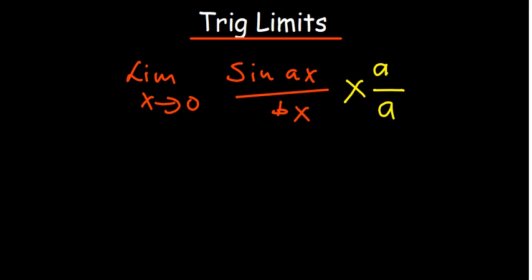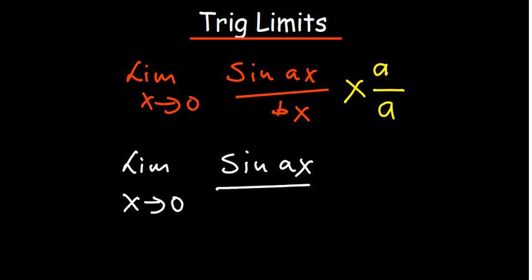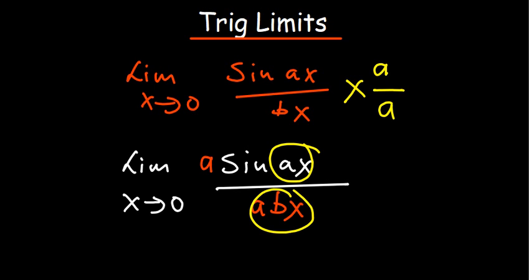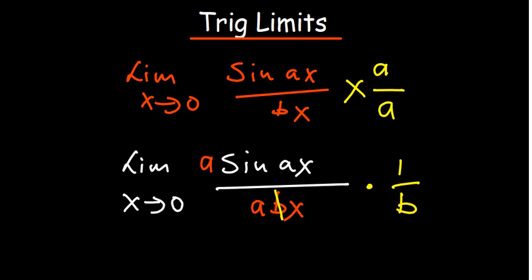We can multiply the numerator and denominator by 'a'. On the next step, we have the limit as X approaches zero of sine aX, and on the denominator we have a times bX. It's not quite matching yet — we need aX in the denominator. So we factorize out the 'b': removing the 'b' from the bottom is the same as multiplying by one over b.